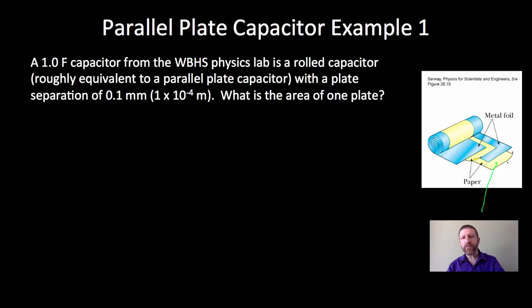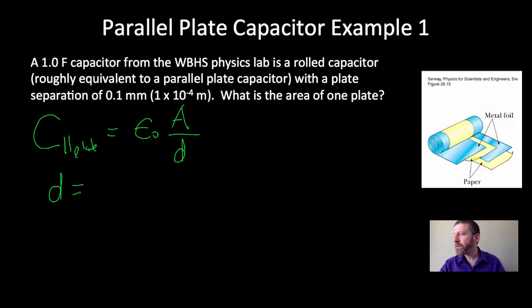Let's go ahead and figure that out. We know that the capacitance of a parallel plate is equal to epsilon naught times A over D. And I'm also given that D, the distance between the plates, is 1 times 10 to the negative 4th meters. The question is, what is A?